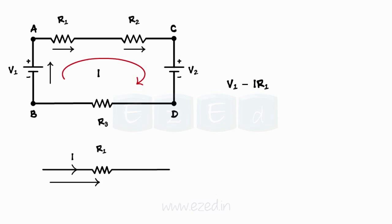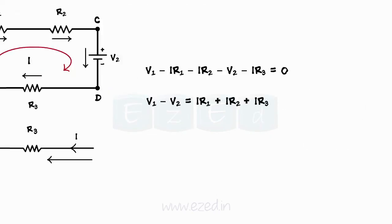As we proceed in the circuit, we get a fall in potential for second source V2. As per case 2 of our sign convention, thus, we represent it as minus V2. Lastly, the drop across resistor R3 is minus I R3. Thus, we get the equation as V1 minus I R1 minus I R2 minus V2 minus I R3 equals 0.